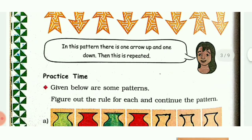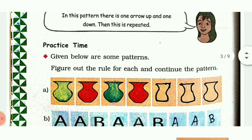Now practice time. Given below are some patterns - figure out the rule for each and continue the pattern. In the first picture the part is in green color, the second one is in red color. This picture is getting repeated. I have not colored it here, but you can color it green and red.